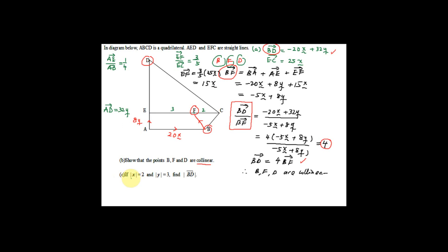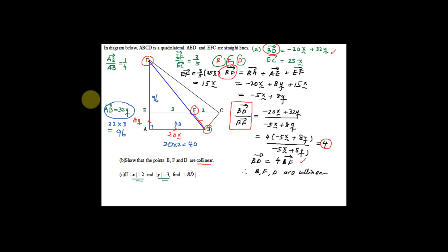For Part C, given that the modulus of x equals 2 and modulus of y equals 3, we need to find the modulus of BD. BD equals negative 20x plus 32y. Since x and y are perpendicular vectors, the magnitude of the 20x component is 20 times 2 equals 40, and the magnitude of the 32y component is 32 times 3 equals 96. Using Pythagoras' theorem, modulus BD equals the square root of 40 squared plus 96 squared, which equals 104.